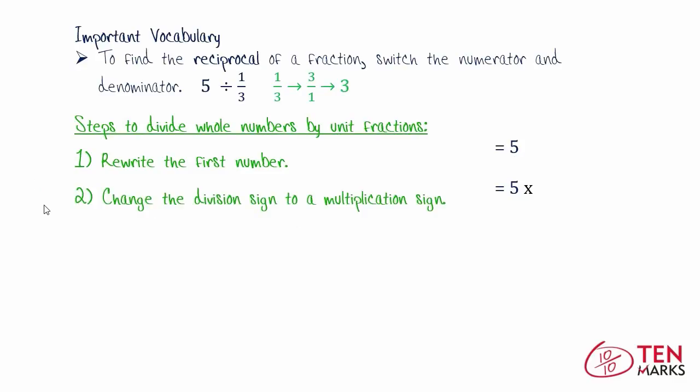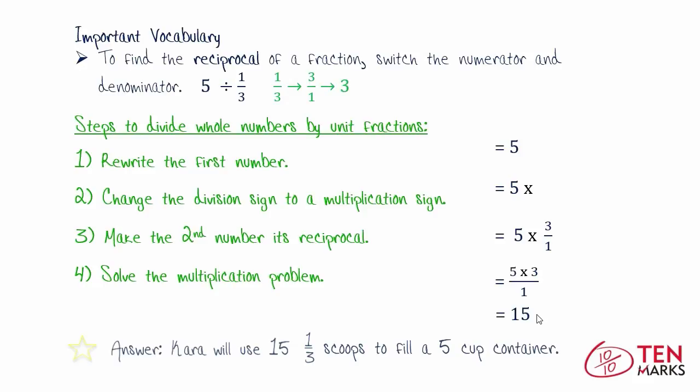Then number two, change the division sign to a multiplication sign. Three, make the second number its reciprocal. Like you just saw, you're going to make one-third three over one, or three. And lastly, you're going to solve the multiplication problem. So five times three divided by one, which gives you fifteen.